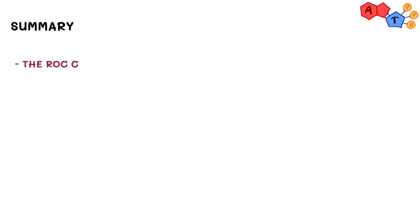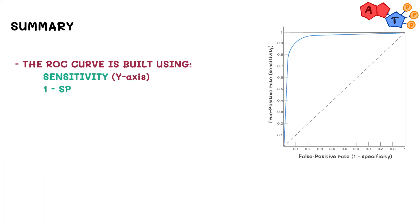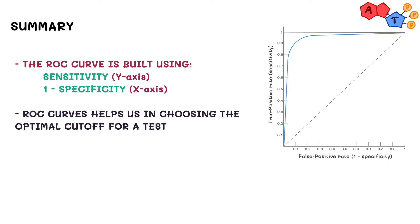In summary, the ROC curve is built using two axes: sensitivity and one minus specificity, otherwise known as the false positive rate. It also allows you to choose the optimal cutoff for a test by looking at the ROC curve of that test.